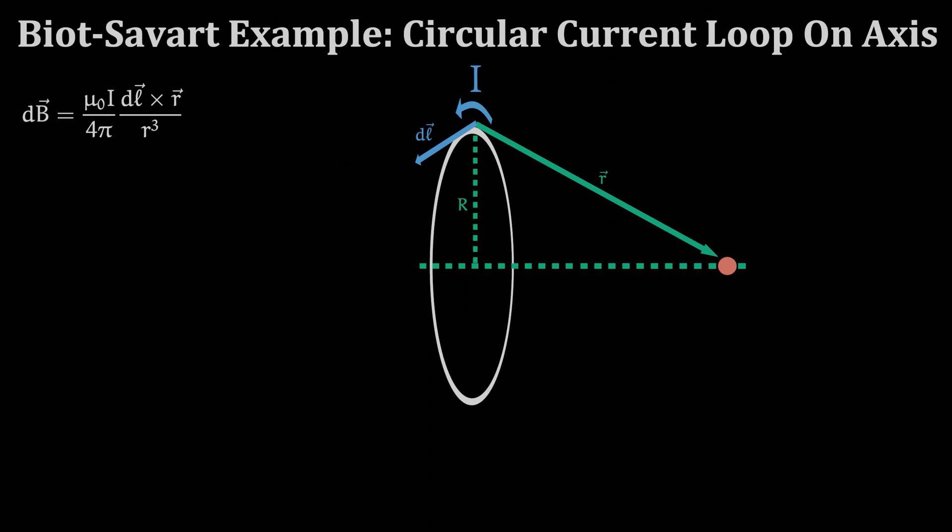Next we should get an expression for just the magnitude of the differential Biot-Savart equation. Taking the magnitude for the cross product we will get the magnitude of vector dl times the magnitude of vector r times the sine of the angle between them.